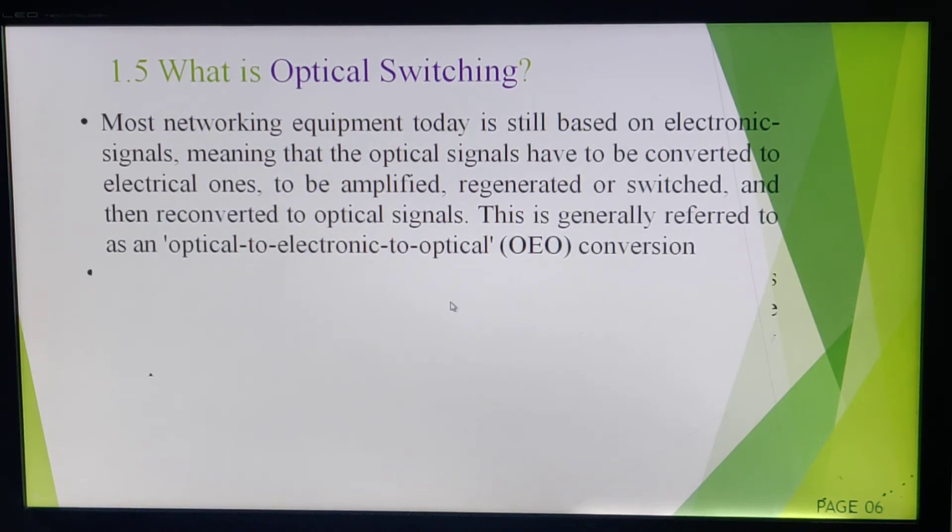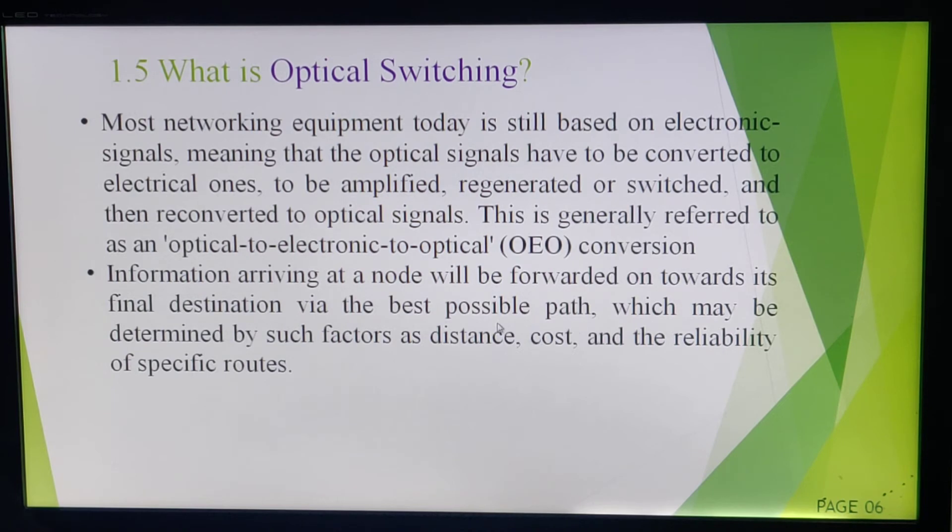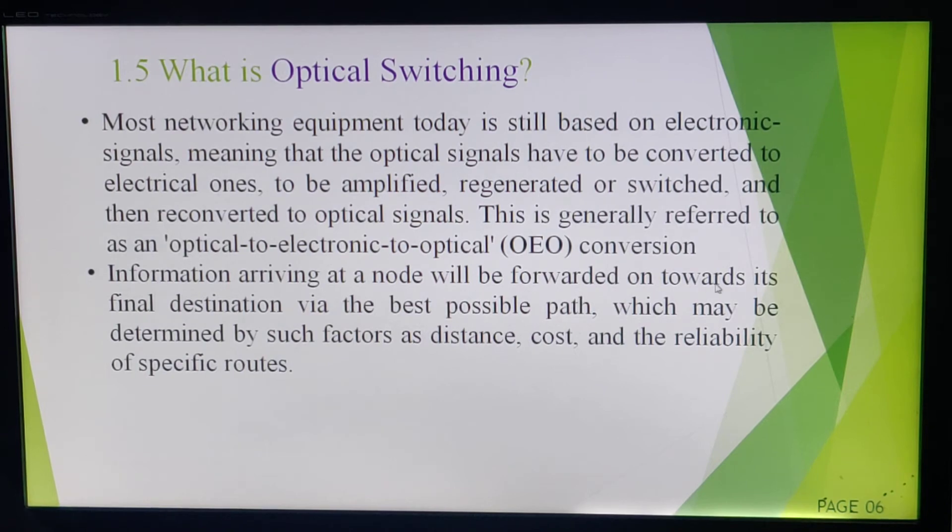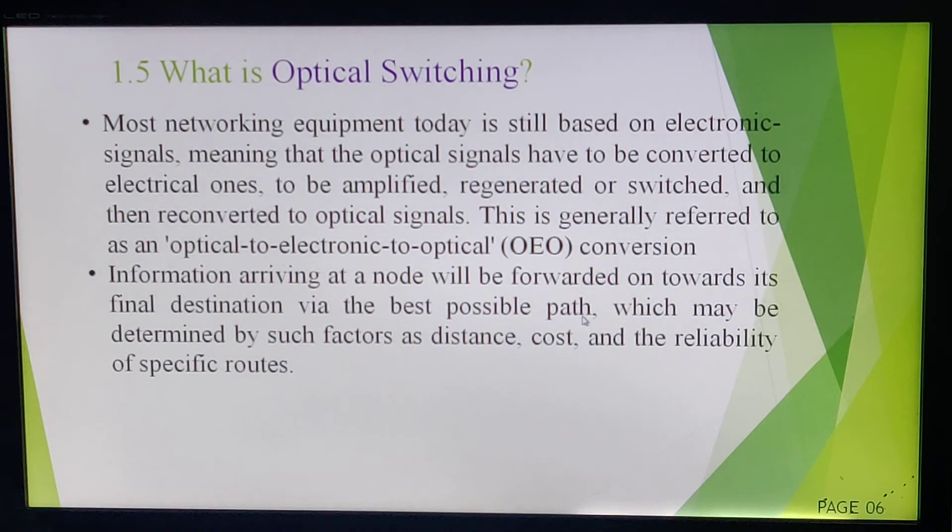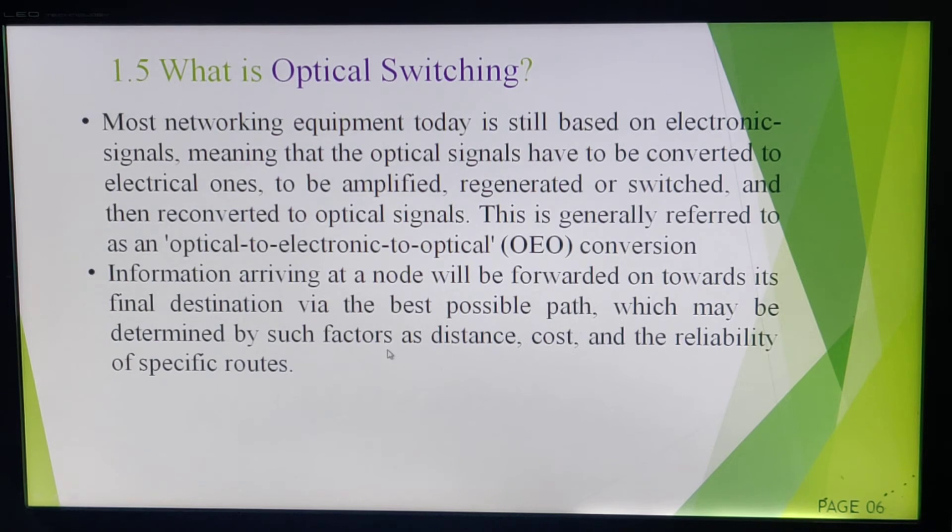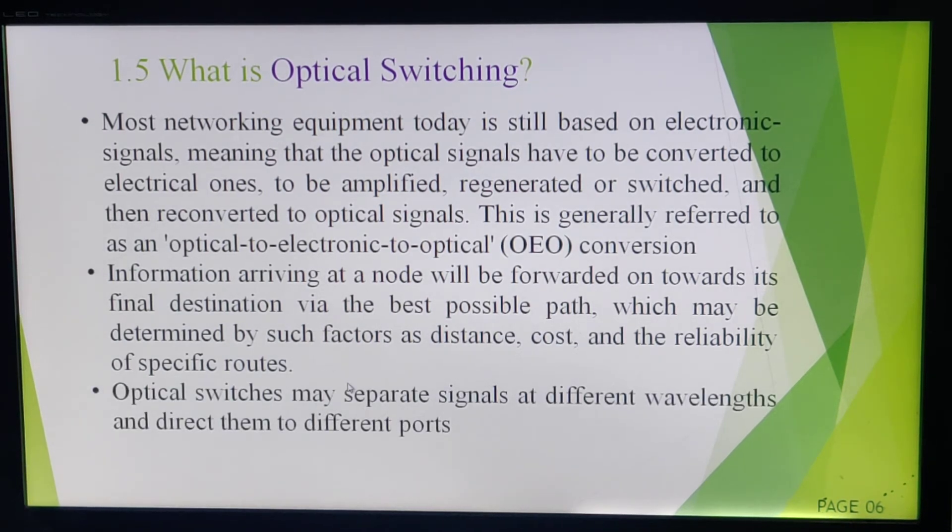Here I have different nodes—the network I have discussed previously. Information arriving at a node will be forwarded towards its final destination via the best possible path. So we can select the path while transmitting my optic signal, which may be determined by such factors as distance, cost, and reliability of specific routes. Optical switches may separate signals at different wavelengths and direct them to different ports.